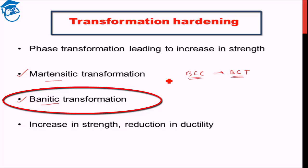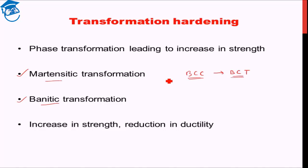The martensitic transformation will be discussed in further detail in future lectures. The key distinction of today's lecture is that precipitation hardening, dispersion hardening, and transformation hardening all involve different phases — unlike the previous strengthening mechanisms. To better understand the physics behind them, we need to understand what a phase is and how phase transformation takes place, which will be covered from the next lecture. That's it for today — hope you join us next time. Have a great day, goodbye!